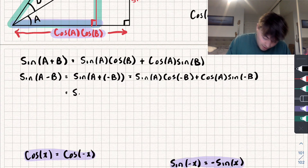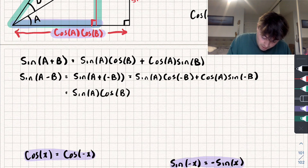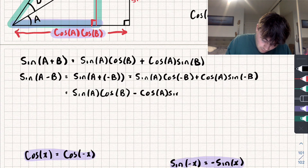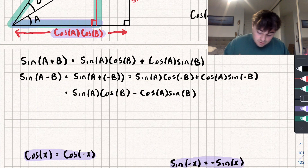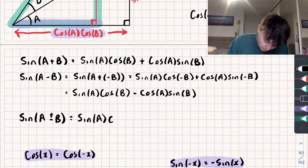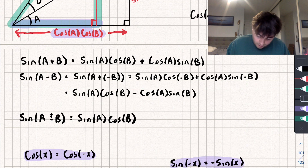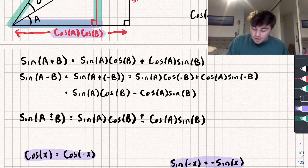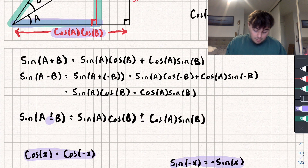So using these rules, sine of A minus B is equal to sine of A cosine of B, because cosine of negative B is the same as cosine of B, plus cosine of A multiplied by negative sine of B, giving us sine of A cosine of B minus cosine of A sine of B. We could actually write this as: sine of A plus or minus B is equal to sine of A cosine of B plus or minus cosine of A sine of B.